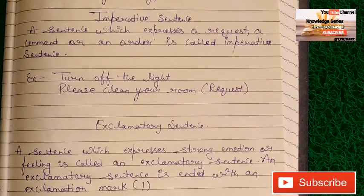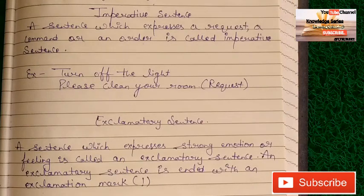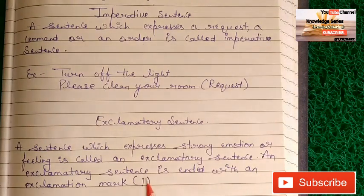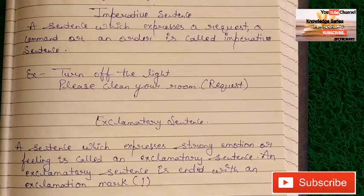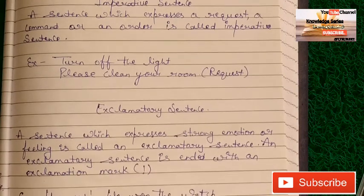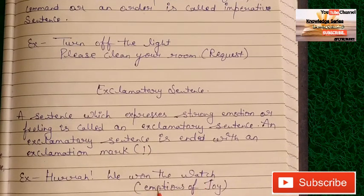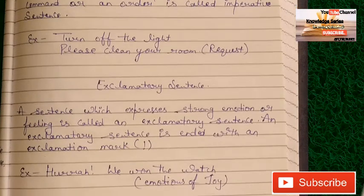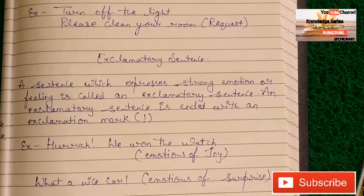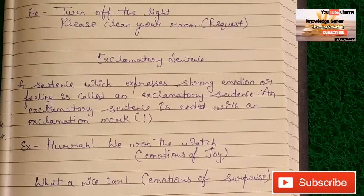Next is the exclamatory sentence. A sentence which expresses a strong emotion or feeling is called an exclamatory sentence. An exclamatory sentence ends with an exclamation mark. Examples: 'We won the match!' — this expresses the emotion of joy. 'What a nice car!' — this expresses the emotion of surprise.